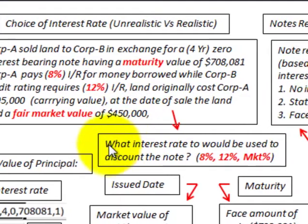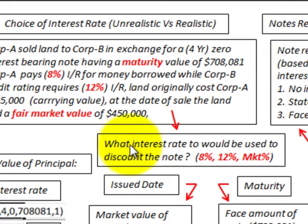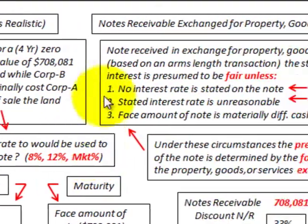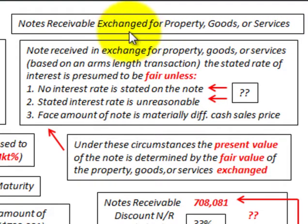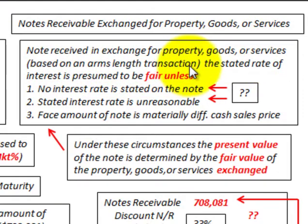So we're left with our dilemma on how we would choose our interest rate and what interest rate would be used to discount this note — the 8%, the 12%, or some other market interest rate. When dealing with notes receivable that aren't readily exchanged or are exchanged for property, goods, or services where we don't have a marketable interest rate, we have to follow certain guidelines. The note received in exchange for property, goods, or services based on an arm's length transaction: the stated rate of interest is presumed to be fair unless specific conditions apply.